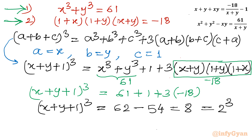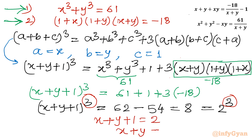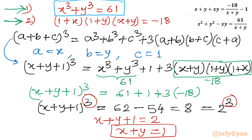Now you can see the powers are the same, so the bases must be equal to each other. So I equate x plus y plus 1 equal to 2, which gives x plus y equal to 1. Now the system is very simple: equation 1 is x cubed plus y cubed equal to 61, and from equation 2 we now have x plus y equal to 1.